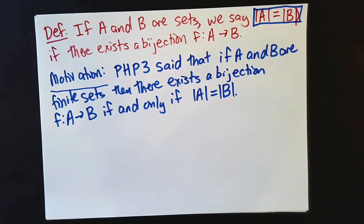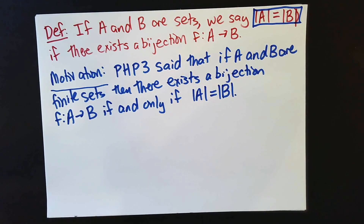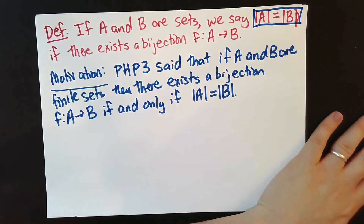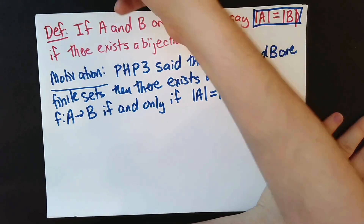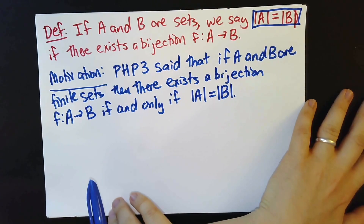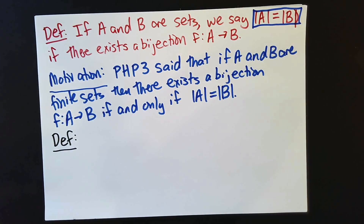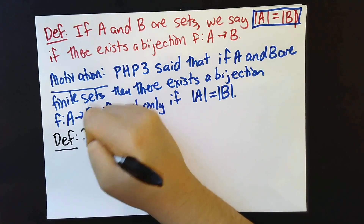This is a very common pattern in mathematics: you study an object in one context, prove theorems about it, then encounter a new context where the original definition doesn't quite make sense — so you use a theorem from the first context as the definition in the new one. Mathematics often ends up being a long string of generalizing something by figuring out the right definition to work somewhere new. I'm now going to give a name to the size of the positive integers — the name Cantor used: aleph-zero, written ℵ₀.